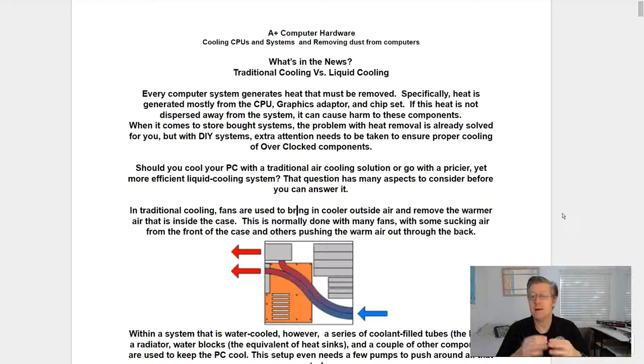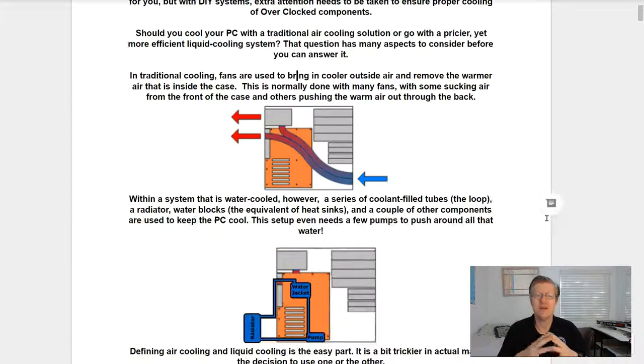Every computer system generates heat that must be removed. Specifically, heat is generating mostly from CPU, the graphics adapter, and the chipset. If this heat is not dispersed away from the system, it can cause harm to these components. When it comes to store-bought systems, the problem with heat removal is already solved for you. But with the do-it-yourself systems, extra attention needs to be taken to ensure proper cooling of overclocked components. Should you cool your PC with a traditional air cooling solution or go with a pricier yet more efficient liquid cooling system? That question has many aspects to consider before you can answer it.